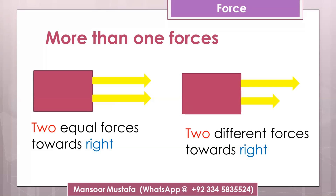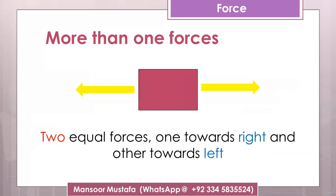Now consider another example: these two forces are acting in the same direction but they have different magnitudes, because if you look at the lengths, one is larger and one is smaller - it means that the magnitude is different.